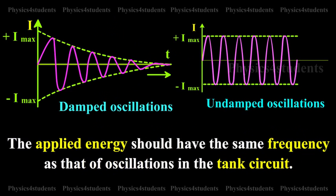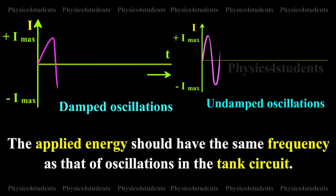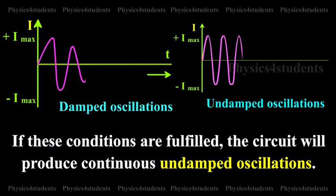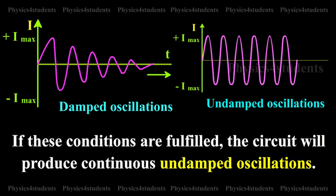The applied energy should have the same frequency as that of oscillations in the tank circuit. If these conditions are fulfilled, the circuit will produce continuous undamped oscillations.